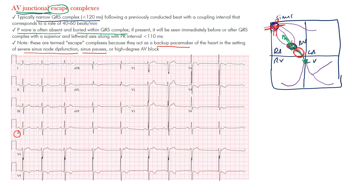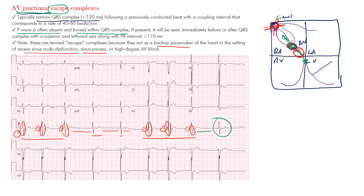Looking at lead two on the EKG strip: you have normal beats — P wave, QRS complex — repeating, then a delay with no P wave, then a QRS complex and T wave. This pattern of a junctional escape beat repeats, and then you return to a normal P wave and QRS complex. You can see three junctional escape beats in this example.